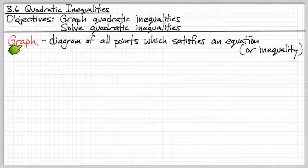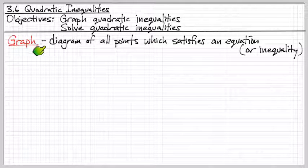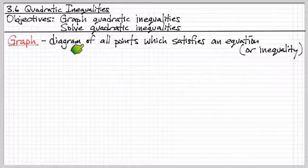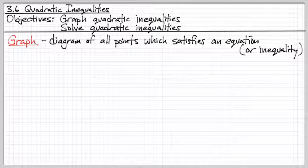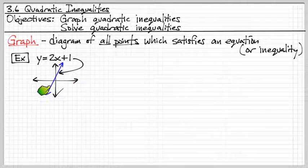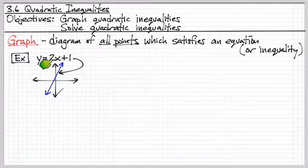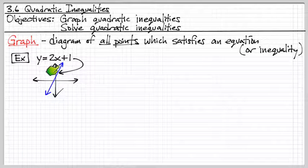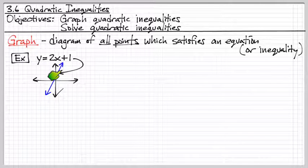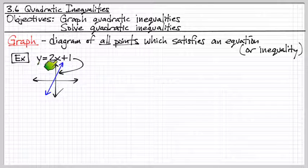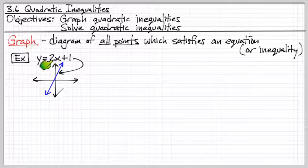Now, when we graph things, we're creating a diagram which illustrates all the different points that satisfy an equation or an inequality. So, if we have a linear equation, this line is saying every single point on this line, if we were to plug it into this equation, it would be true.